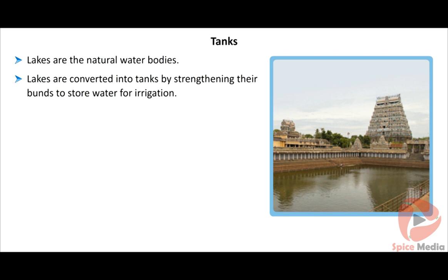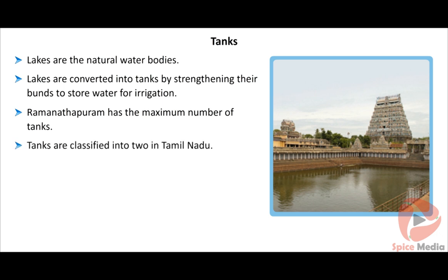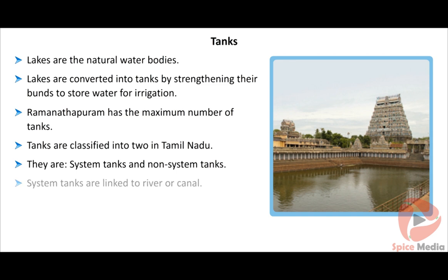Ramanathapuram has the maximum number of tanks. Tanks are classified into two types in Tamil Nadu: system tanks, which are linked to rivers or canals, and non-system tanks, which are dependent on rainfall.